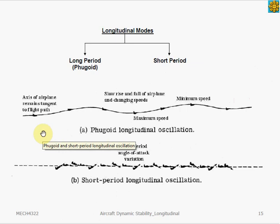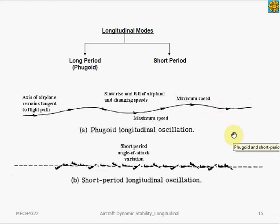We can think of this mode of motion as a gradual interchange between the potential energy and kinetic energy. Think of this motion where the angle of attack of the aircraft is fairly constant, but there's significant variation in pitch attitude and the airspeed. We can see from this response that the motion consists of slow rise and fall of the airplane's altitude, and the airspeed is changing with altitude as well.